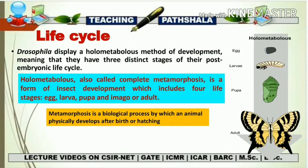Metamorphosis is a biological process by which an animal physically develops after birth or hatching — it is the process of transformation from one stage to another. In the diagram you can see the representation of holometabolous development: egg converts to larva, larva transforms to pupa, and pupa develops into the adult fly. The same developmental pattern is shown by Drosophila.